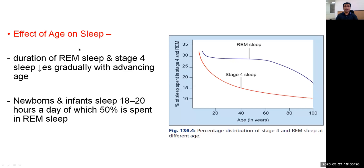Regarding the effect of age on sleep: the duration of REM sleep as well as stage 4 of NREM sleep decreases as age advances. As we can see in the graph showing percentage of time spent in stage 4 NREM and REM sleep versus age in years, newborns and infants sleep 18 to 20 hours a day, of which about 50% is spent in REM sleep.